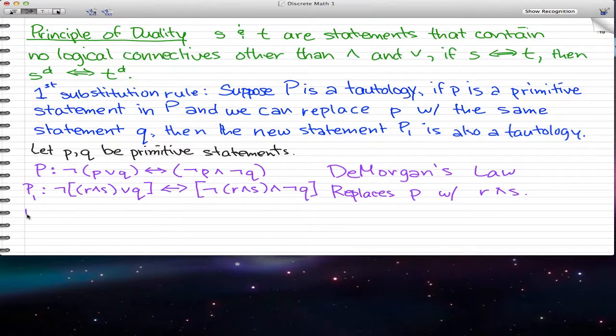So if we extend this one step further, P2, and let's say we replace q with, replace q with t implies u. What will we get? Well, all we get is the following. We're still keeping r and s. And now q is being replaced by t implies u. And this t implies u statement, this compound statement pretty much, it pretty much means or is the same or similar to the primitive statement q.